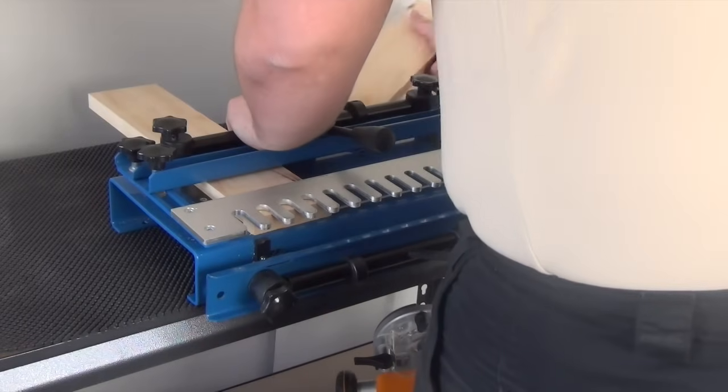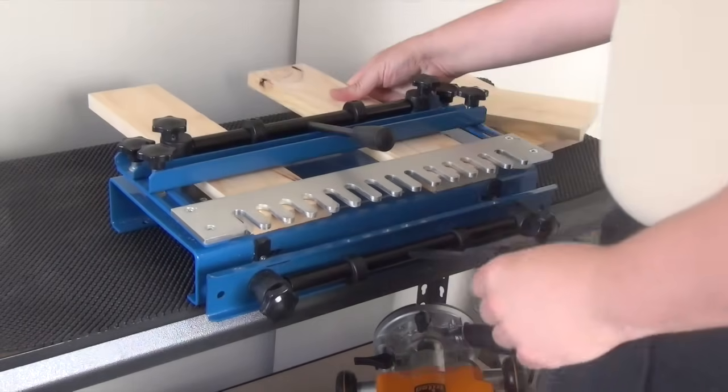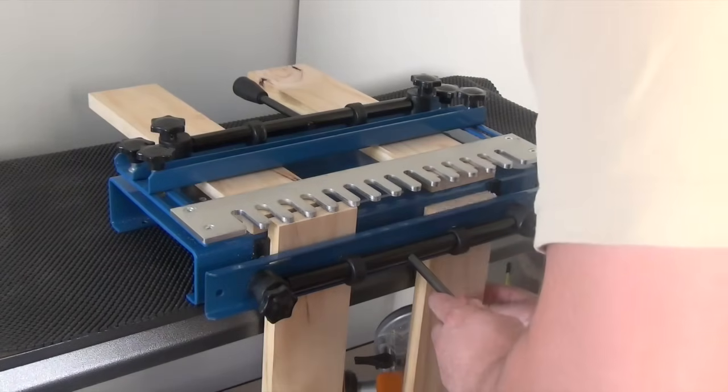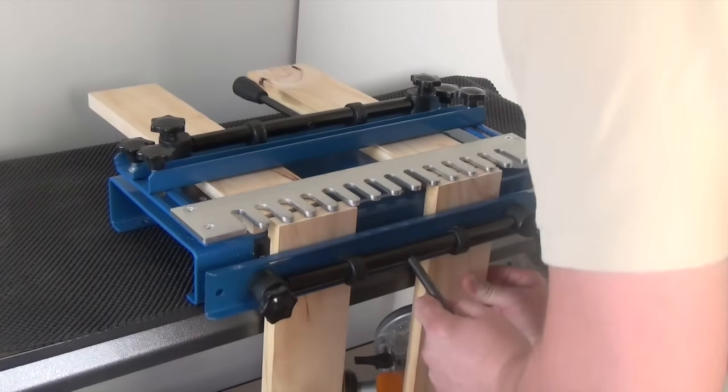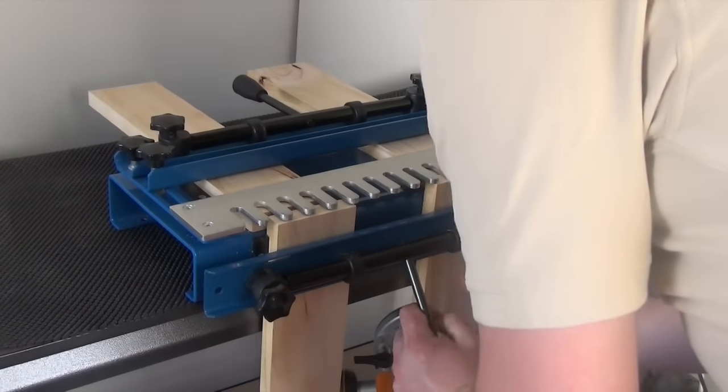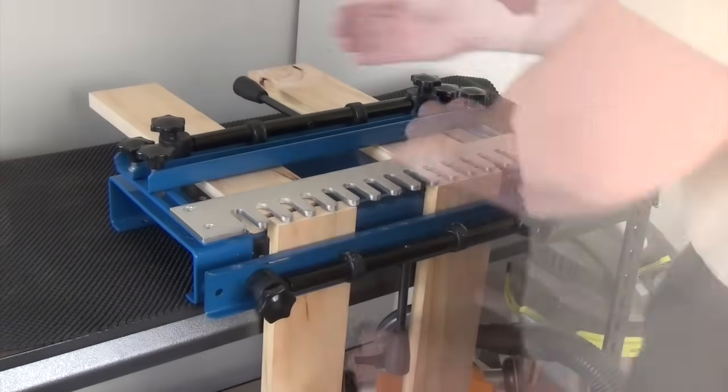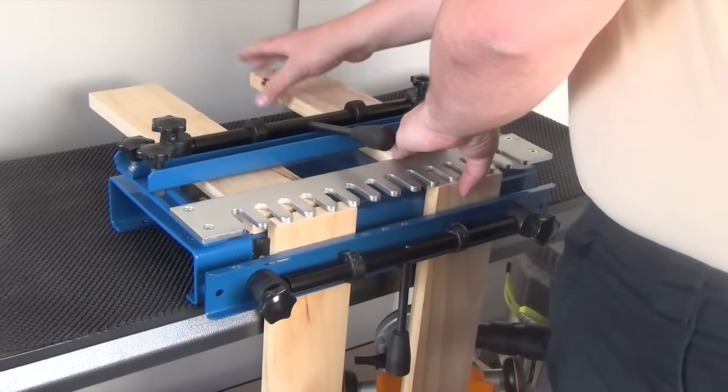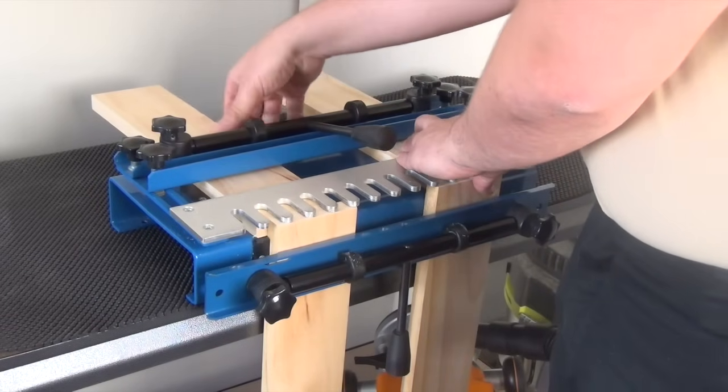The 12 inch jig can accommodate cutting two workpieces at the same time if they are narrow enough. Simply set the stops on both sides of the jig in the same way as shown before. To put two vertical workpieces into the clamp at the same time, put one piece in then press the clamp down halfway. You can still slide the second workpiece in place before locking the two into position.